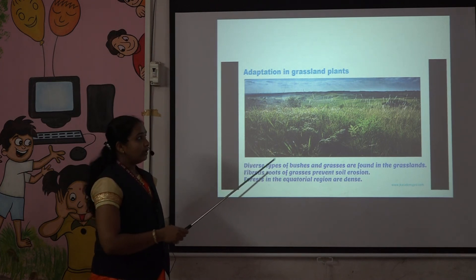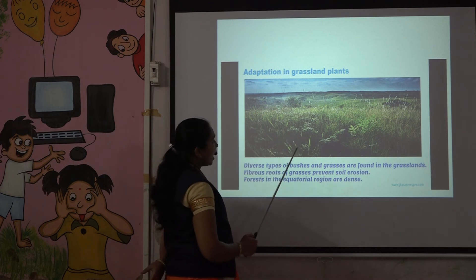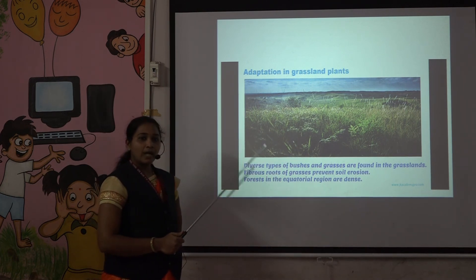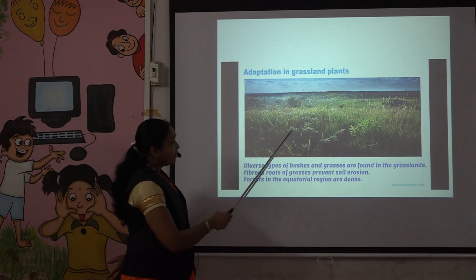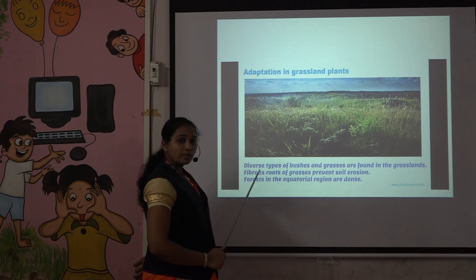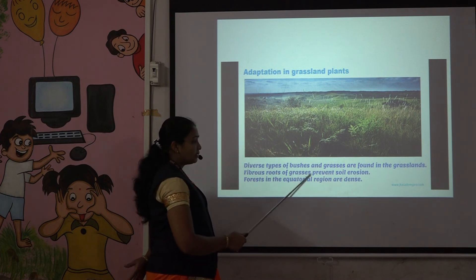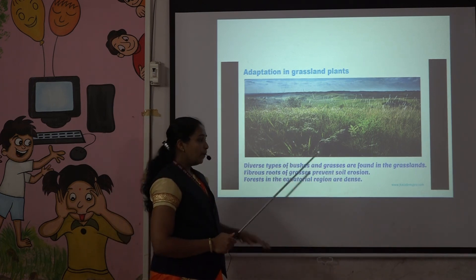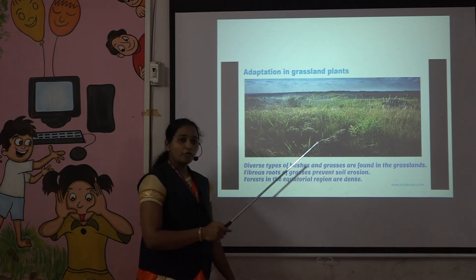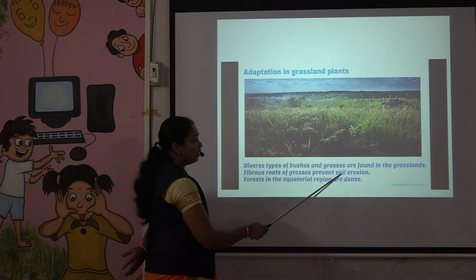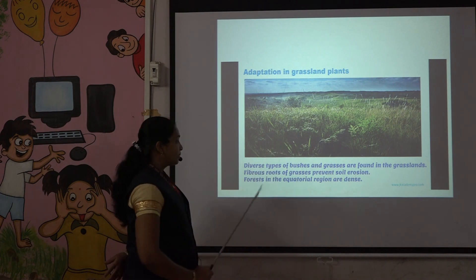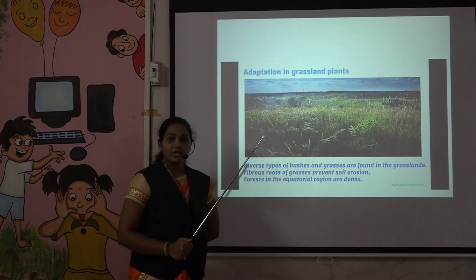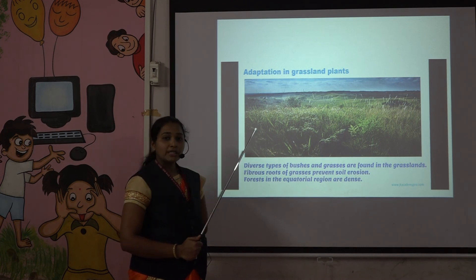Now let's talk about adaptation in grassland plants. In our view, all grass is seen with no trees. In grasslands, there are various types of grasses and bushes. Grasses have fibrous roots that hold the soil firmly and prevent soil erosion. Soil erosion means the washing away of the upper layer of soil due to heavy rainfall, floods, or storms. In these grasses, animals like tigers, elephants, and deer are hidden. In cold regions, small grasses and rabbit animals are seen.